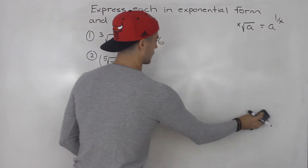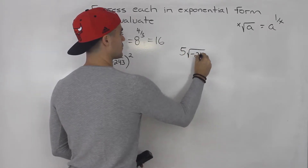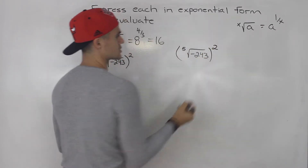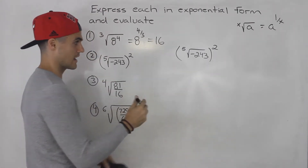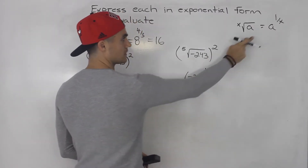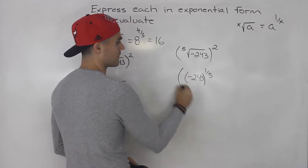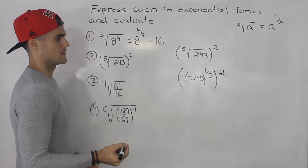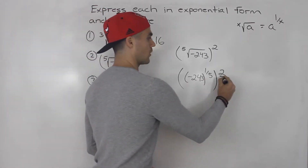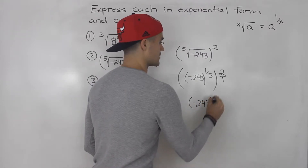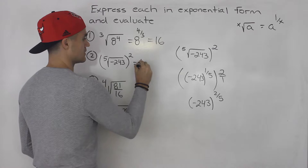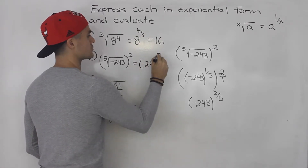Moving on to number 2: we have the fifth root of negative 243, squared. The 5 here is the root index, not multiplication. Using the conversion law, this becomes negative 243 to the power of 1 over 5, and that whole thing is to the power of 2. Multiplying the exponents gives negative 243 to the power of 2 over 5. That is the exponential form of this radical expression.